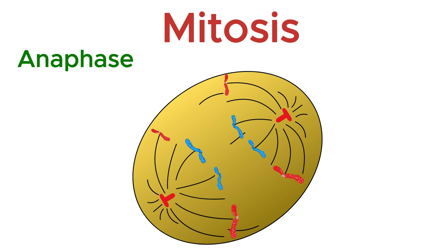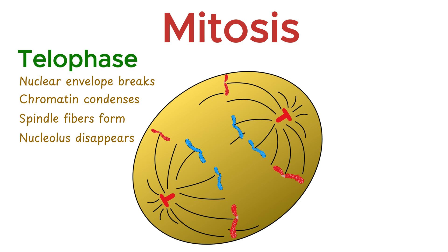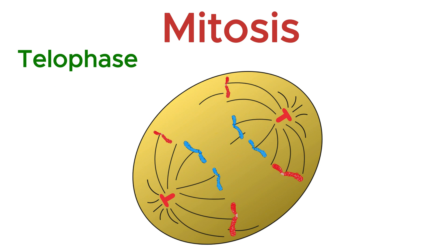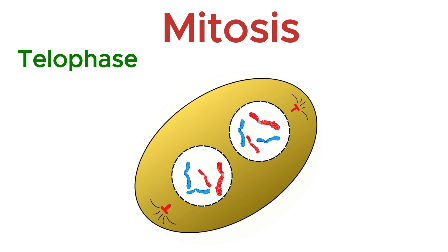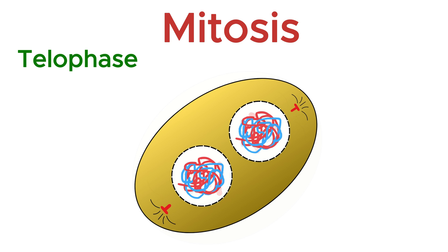After the chromosomes have been pulled to opposite poles during anaphase, the cell enters the final stage of mitosis: telophase. In telophase, everything that was undone during prophase is now rebuilt. The spindle fibers start to disappear. A new nuclear envelope forms around each set of chromosomes at both poles, creating two distinct nuclei within the same cell. The chromosomes begin to uncoil and return to their thread-like form called chromatin, just like they were before mitosis began.